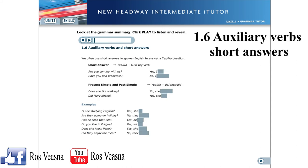1.6 Auxiliary verbs and short answers. We often use short answers in spoken English to answer a yes-no question. To make a short answer, we use yes or no and repeat the auxiliary verb. Are you coming with us? Yes, I am. Have you had breakfast? No, I haven't. In the present simple and past simple, we use a form of do or did. Does she like walking? No, she doesn't. Did Mary phone? Yes, she did.